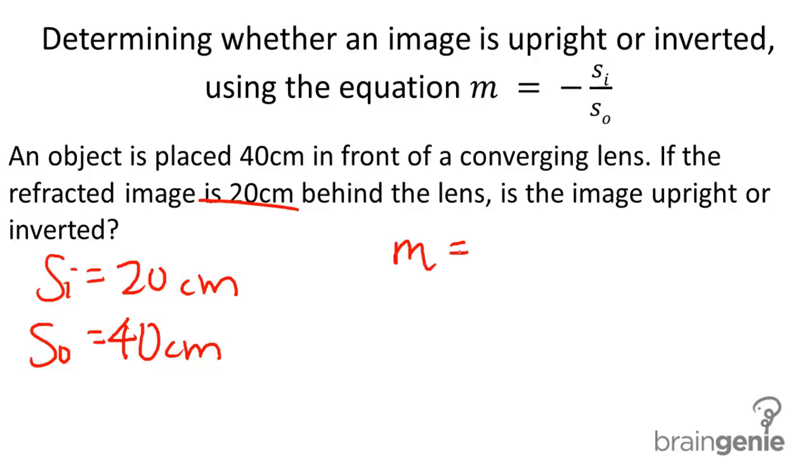Now, we go ahead and plug this into our equation, and we get M equals negative 20 over 40, and that gives us an M value of negative 1 half.